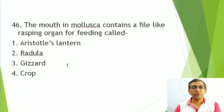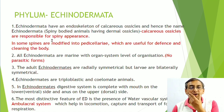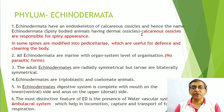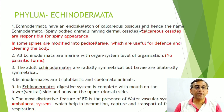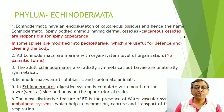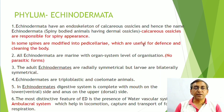As per NCERT, Echinodermates have an endoskeleton of calcareous ossicles — an endoskeleton made up of calcium carbonate. That is why the name is Echinodermata: 'echinus' means spiny-bodied animals having dermal ossicles. They have calcareous ossicles responsible for the spiny appearance.